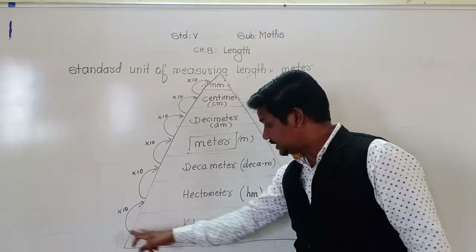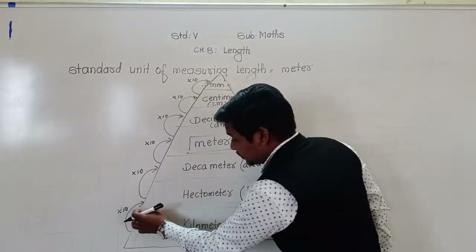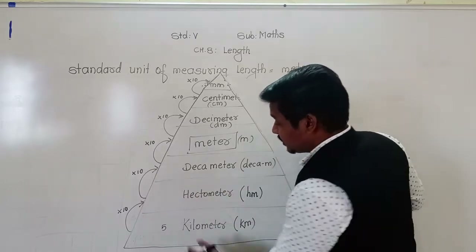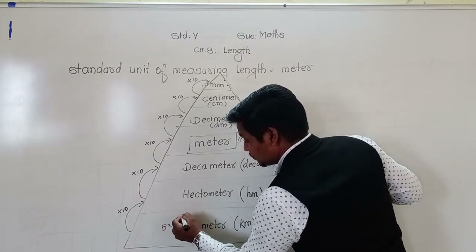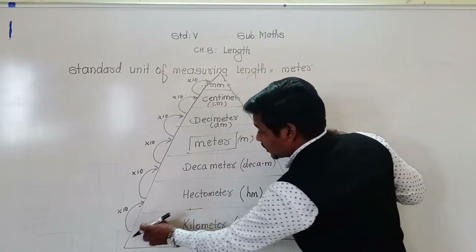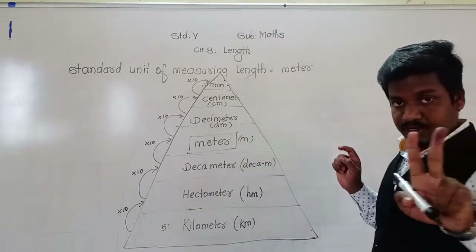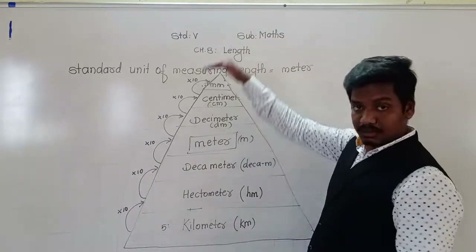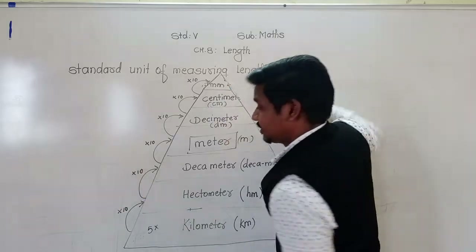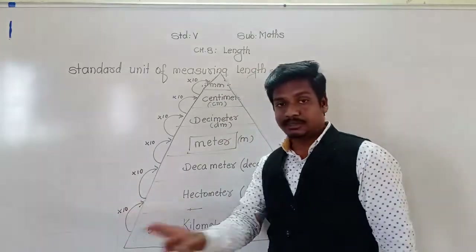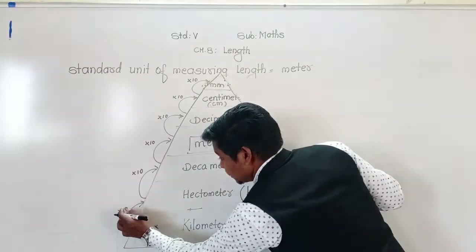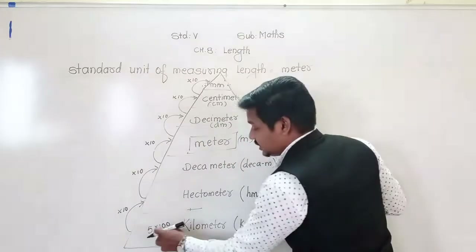For example, converting kilometre into hectometre means going one step up, so we multiply by 10. If we have 5 kilometres, that is 5 × 10 = 50 hectometres. If we want to convert 5 kilometres into decametres, that is 2 steps up, so we multiply by 10 × 10 = 100, giving 500 decametres. To convert kilometre into metre is 3 steps up, so we multiply by 10 × 10 × 10 = 1000, giving 5000 metres.